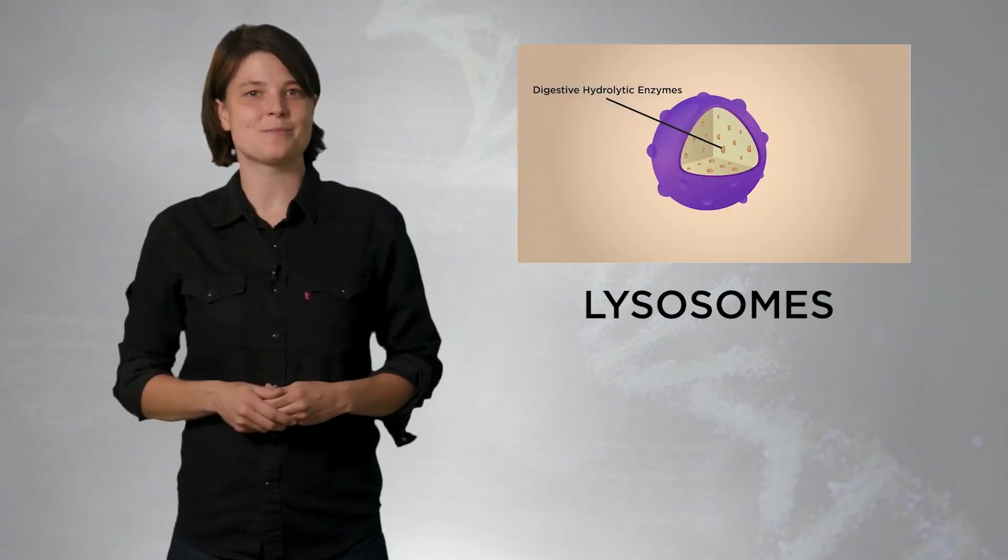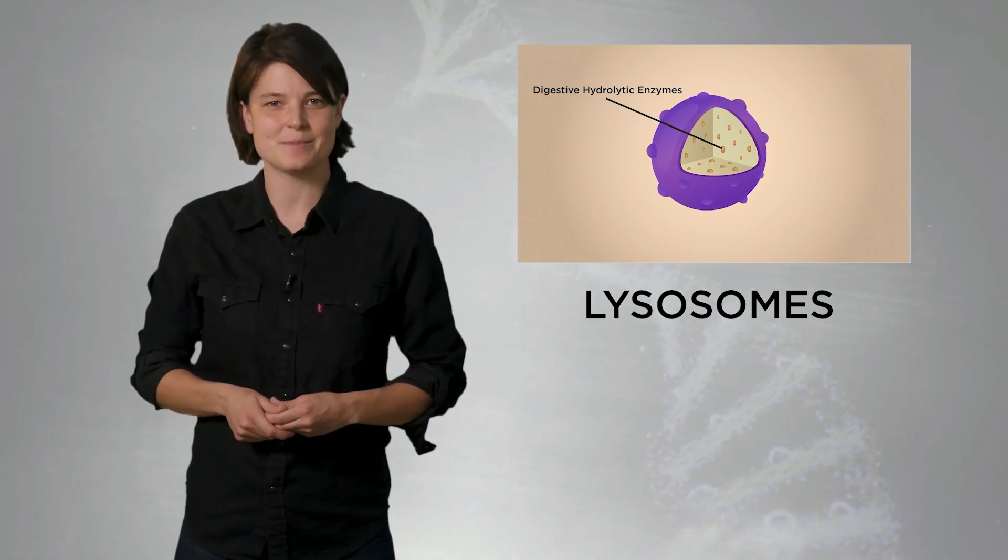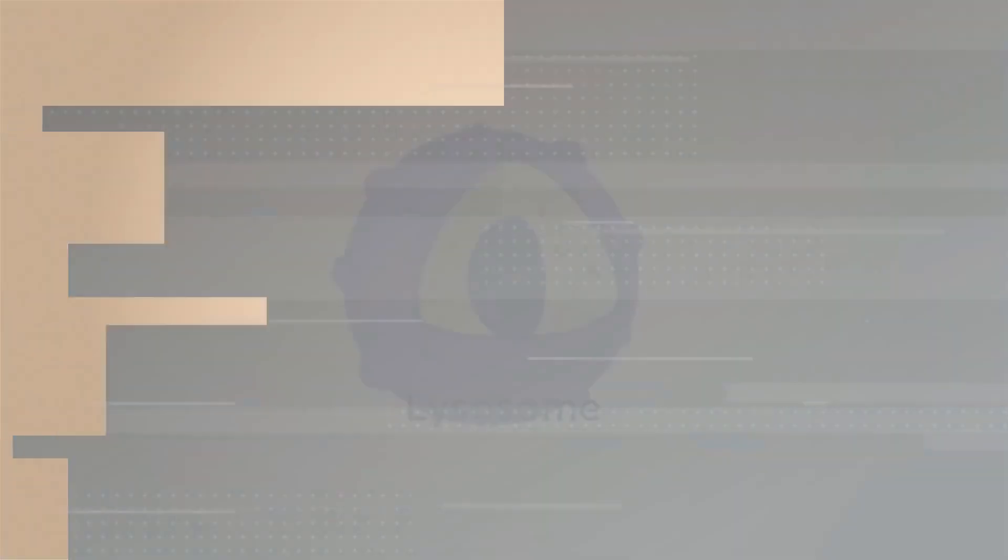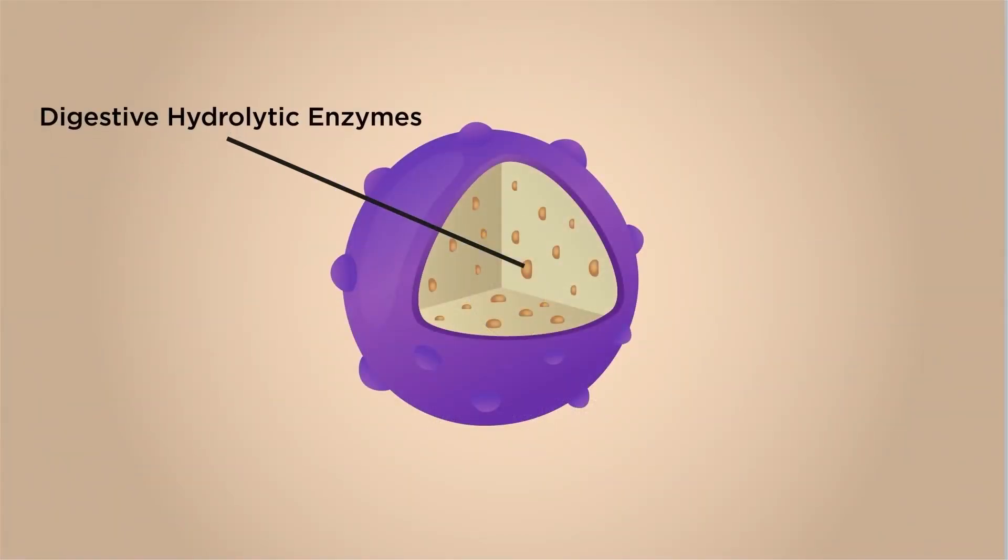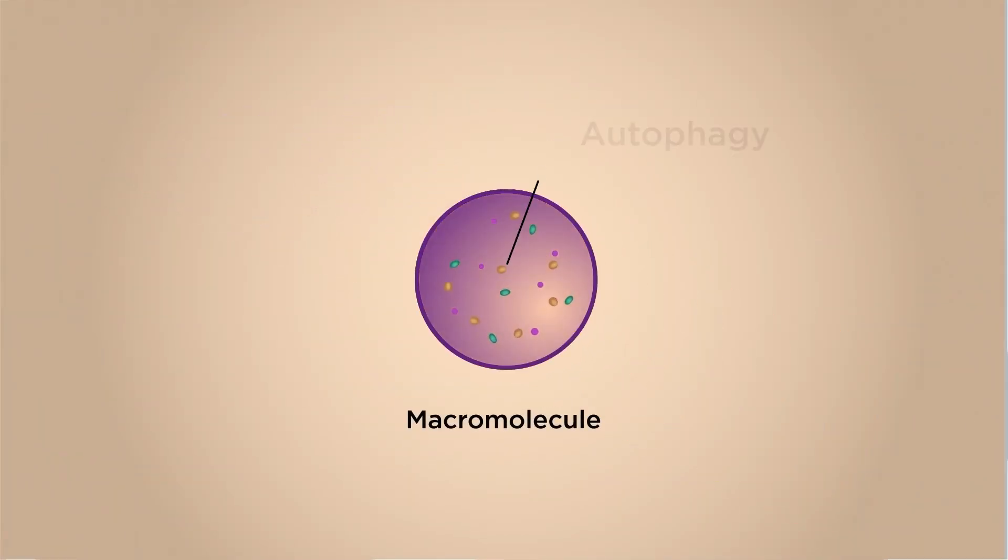Let's now talk about lysosomes. These are membrane-bound vesicles that contain hydrolytic enzymes, which are enzymes that can digest large molecules. One purpose of lysosomes is to break down the cell's old macromolecules and recycle the parts for future use. This process is known as autophagy or self-eating.